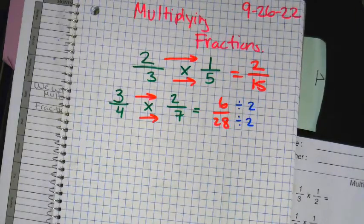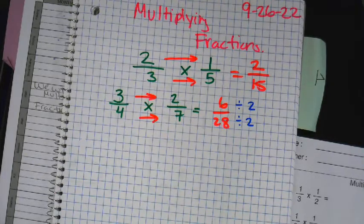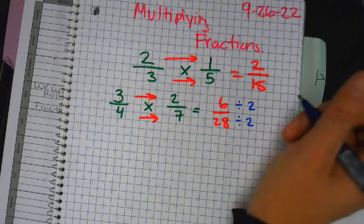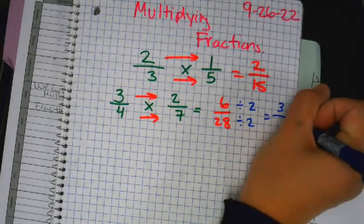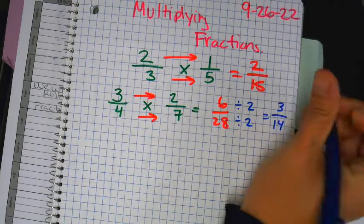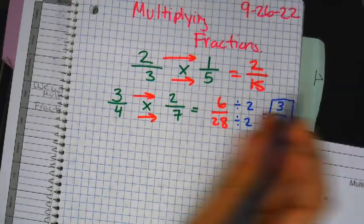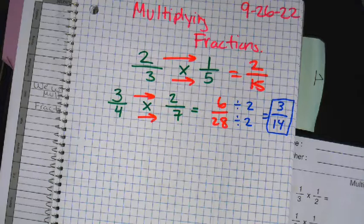I'm not going to shout out anything because I do look really bad in front of my teacher. 6 divided by 2 is 3. 28 divided by 2 is 14. So that's the final answer in simplest form — 3 over 14. So the hardest part is the simplifying. That's it.